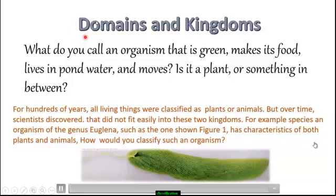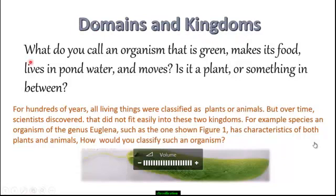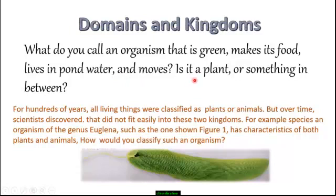Good morning everybody. Today we will take a lesson about domains and kingdoms. What do you call an organism that is green, makes its own food, lives in pond water, and moves — is it a plant or something in between? For hundreds of years, all living things were classified as plants or animals, but over time scientists discovered that some organisms did not fit easily into these two kingdoms.